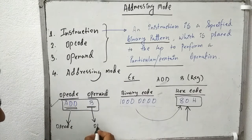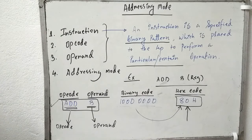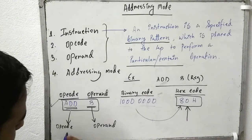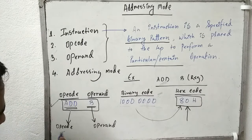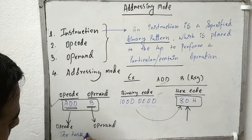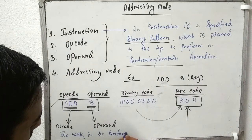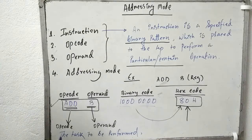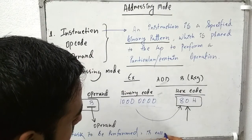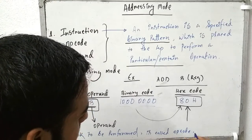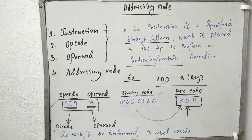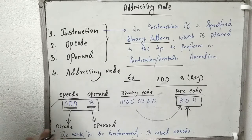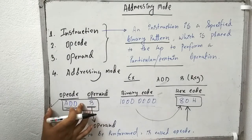So as you can see, there is an opcode and an operand here. What is opcode? The opcode is the task to be performed. So this ADD is the opcode — that task could be an addition, a subtraction, or anything else. The task to be performed is called the opcode. So ADD defines which operation needs to be performed.